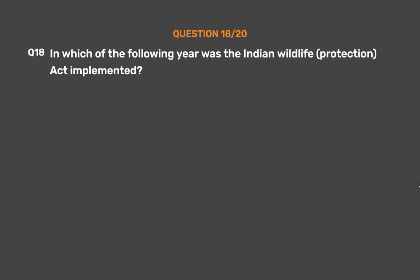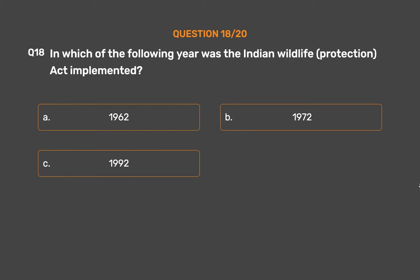Question number 18. In which of the following years was the Indian Wildlife Protection Act implemented? Option A: 1962. Option B: 1972. Option C: 1992. Option D: (not stated).